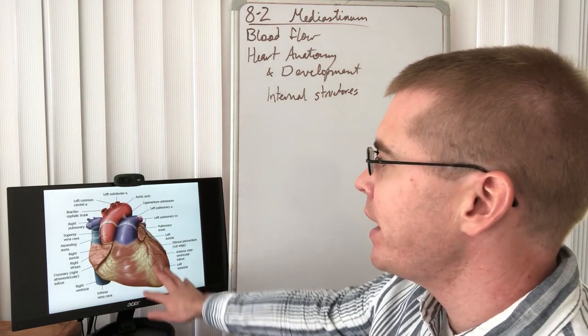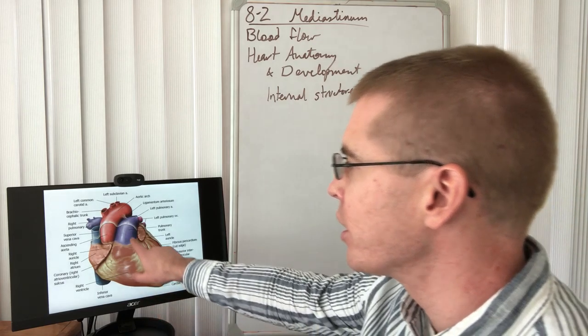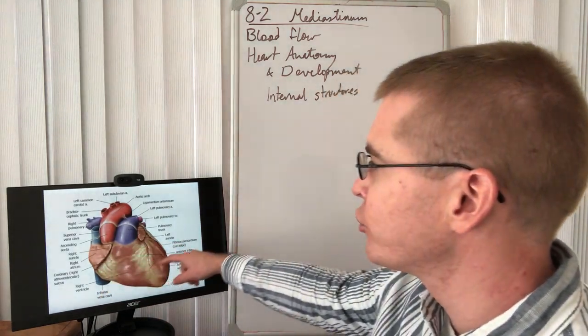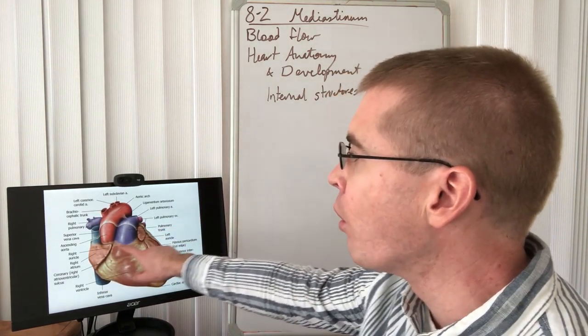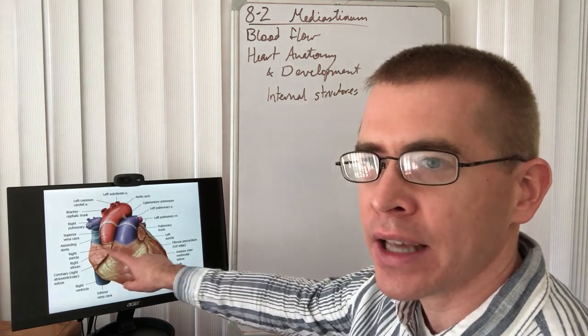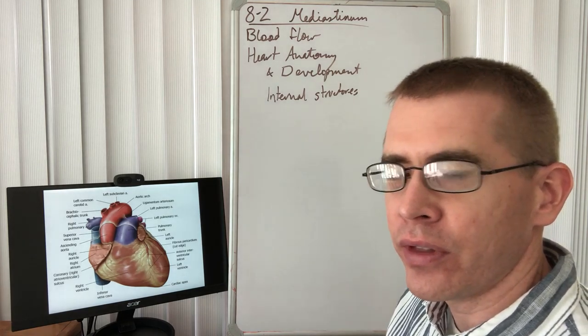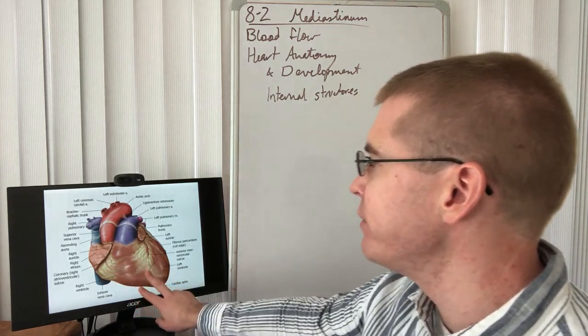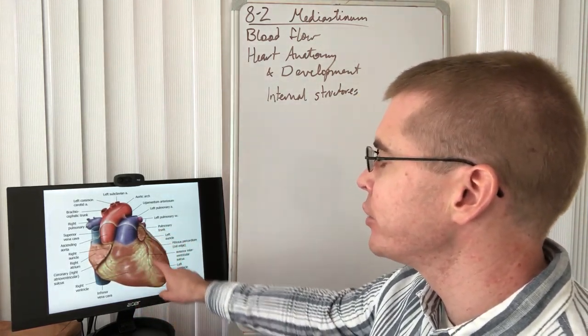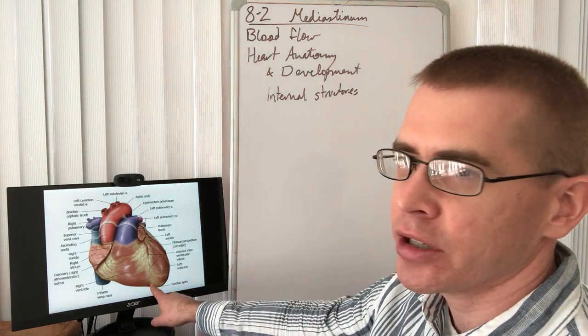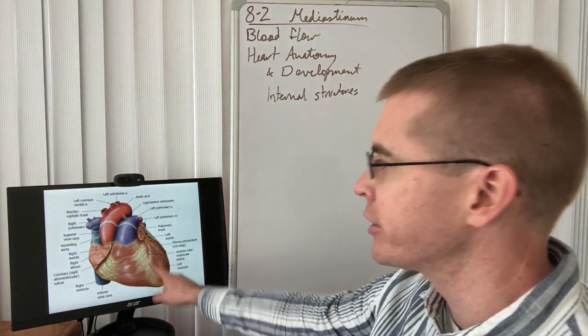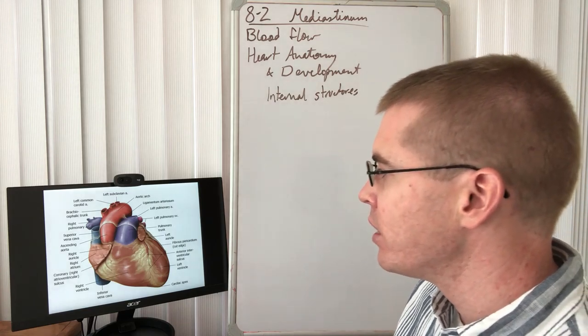So here we have the anterior anatomical view of the heart. We can see the right atria and the left atria, the little auricles of the atria sticking out from the atria. The auricle is just like the flappy ear of the atria. We can see the right ventricle and the left ventricle separated by the anterior interventricular sulcus with the anterior interventricular artery within it.